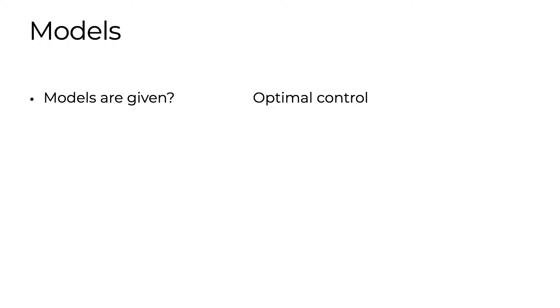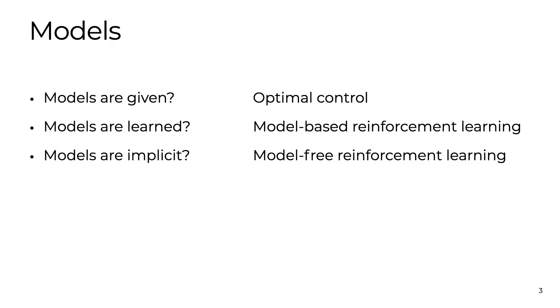If we don't have the model, then we can do reinforcement learning. There are two branches of reinforcement learning. In model-based RL, we explicitly learn these models. In model-free RL, they are implicitly learned by our learning agent.